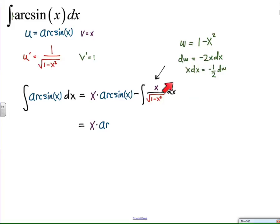And in this situation, actually, I see x dx. So I solve for x dx, and I find negative one-half dw. So that's the connection between dx and dw.